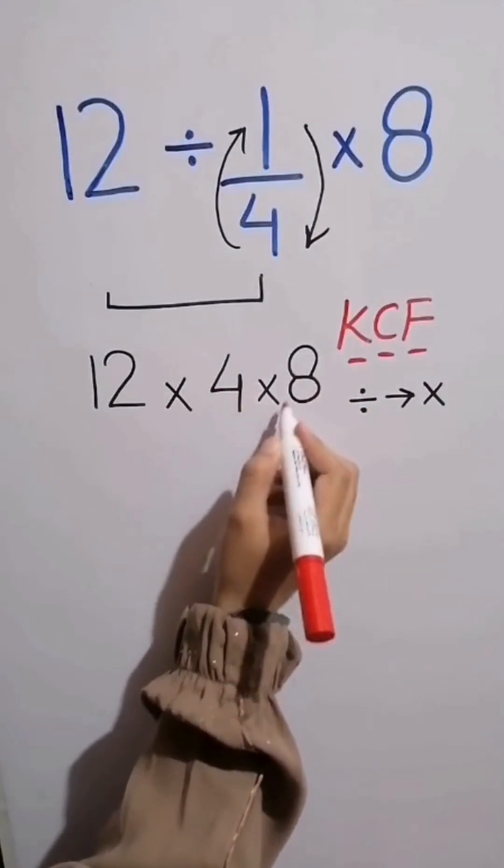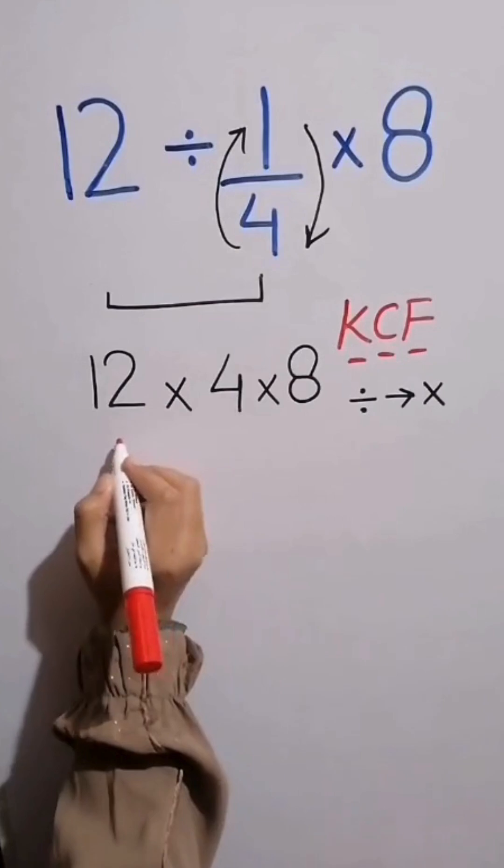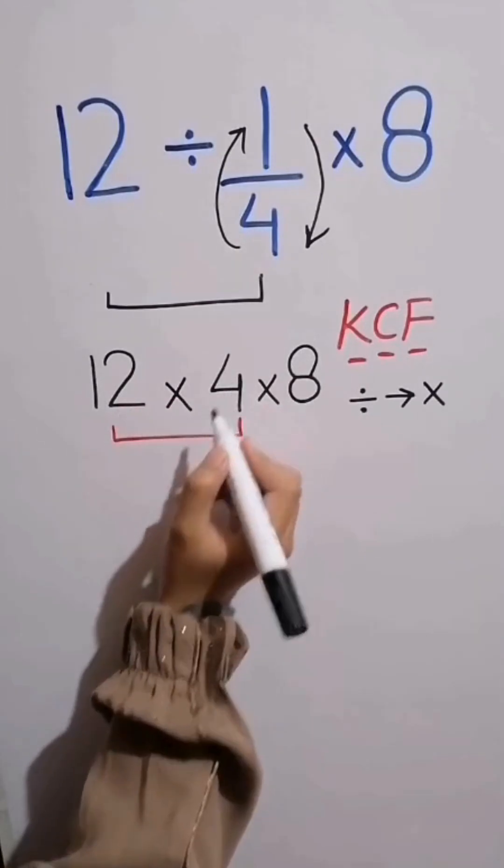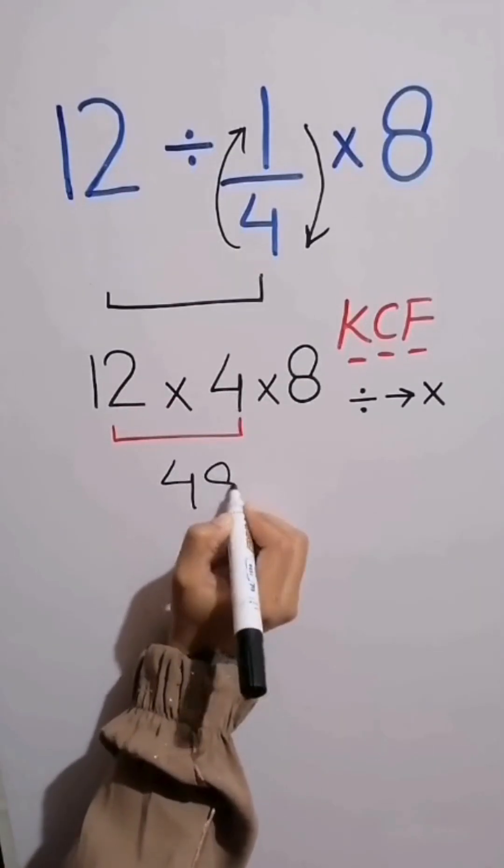Now we have two multiplication signs and we move from left to right. We do multiplication between 12 and 4 that equals 48 then times 8.